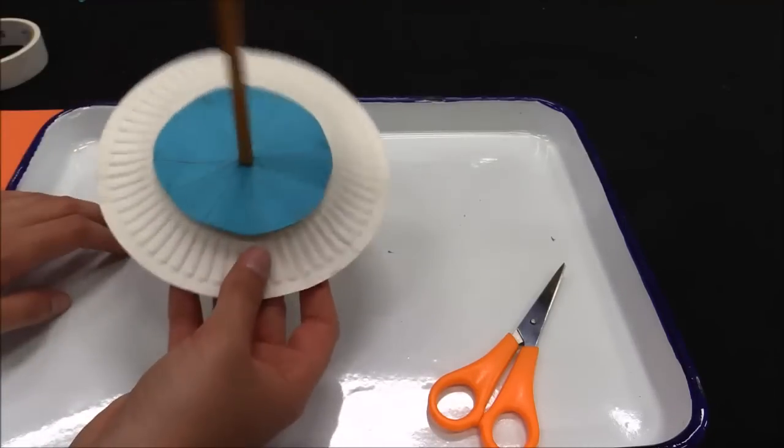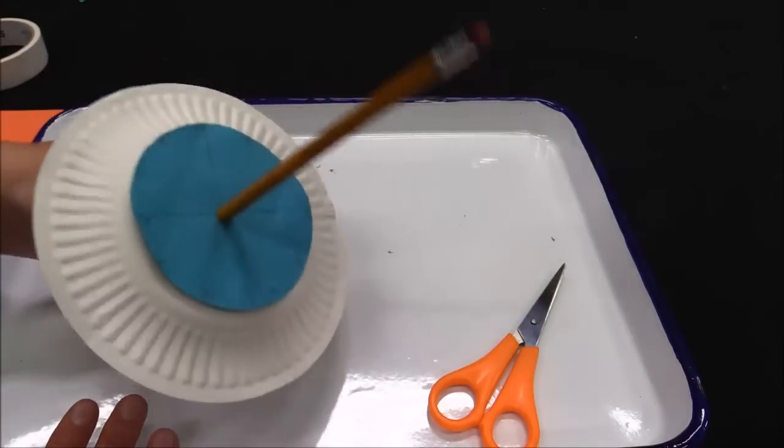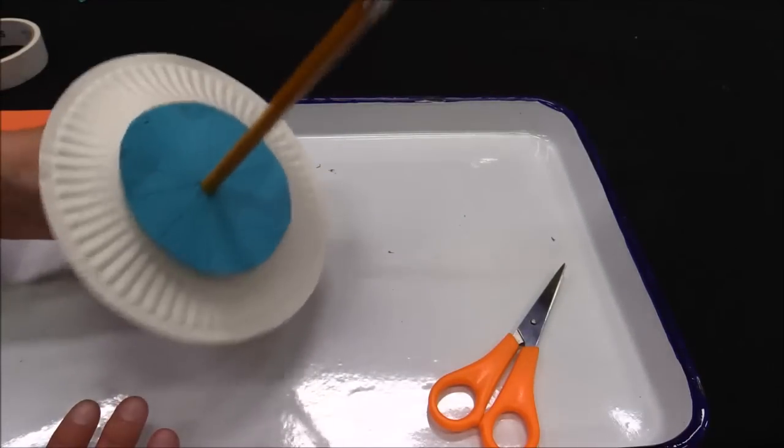And then you're going to kind of stick your pencil through the middle of it and this is what your completed sundial looks like.